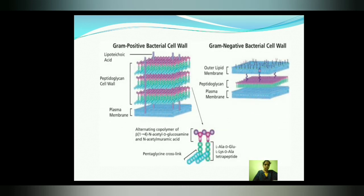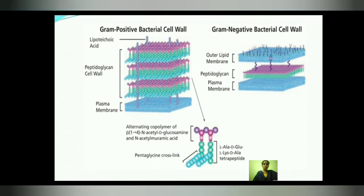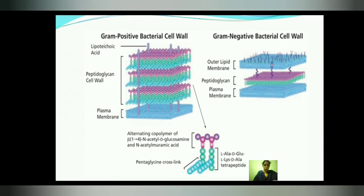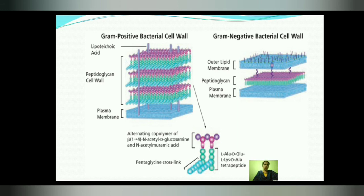Looking at a brief picture of Gram-positive and Gram-negative cell walls: the Gram-positive cell wall has lipoteichoic acid, peptidoglycan, and plasma membrane. The Gram-negative cell wall has the same plasma membrane and peptidoglycan, but instead of teichoic acid it has an outer lipid membrane. We are going to discuss the structures present in each and their functions in detail.